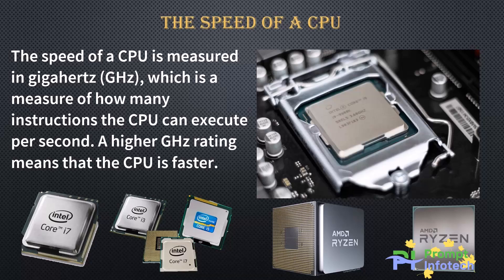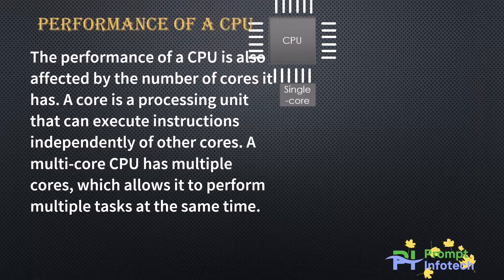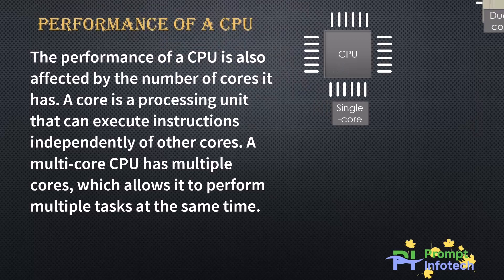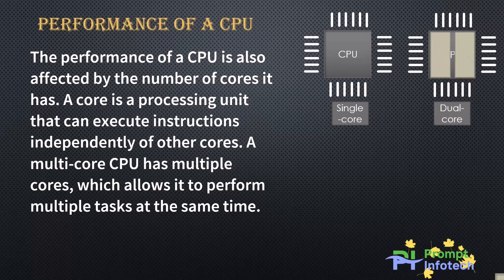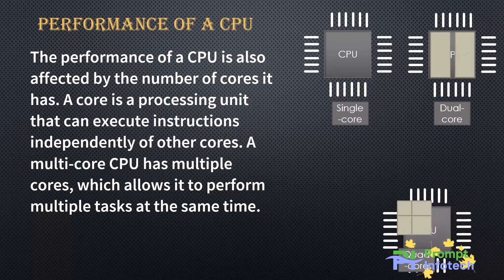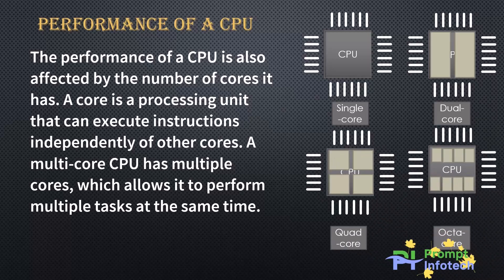The performance of a CPU is also affected by the number of cores it has. A core is a processing unit that can execute instructions independently of other cores. A multi-core CPU has multiple cores, which allows it to perform multiple tasks at the same time.